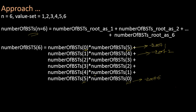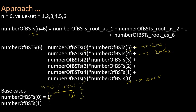Notice that this is a recursive computation, and for convergence we need to define base cases. If n equal to 0, the only BST is the null BST. If n equal to 1, only one BST exists with a single node. So our base cases are: number of BSTs for n equal to 0 or n equal to 1 equals 1.